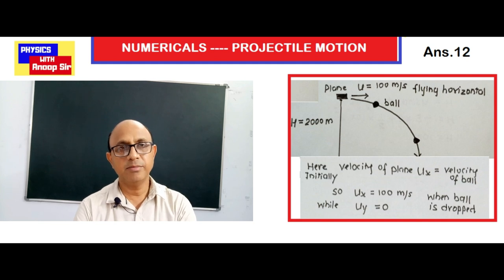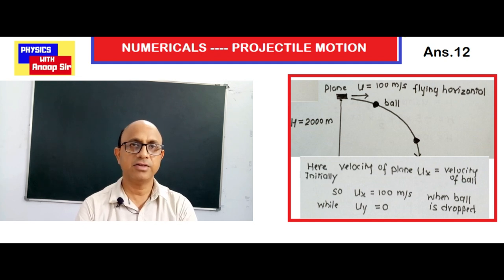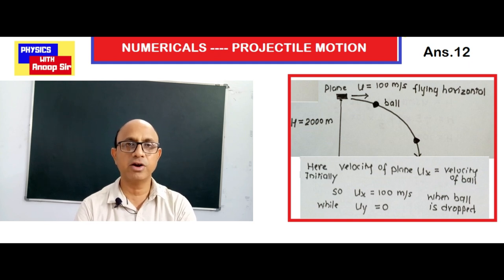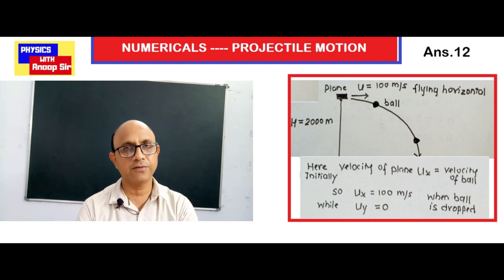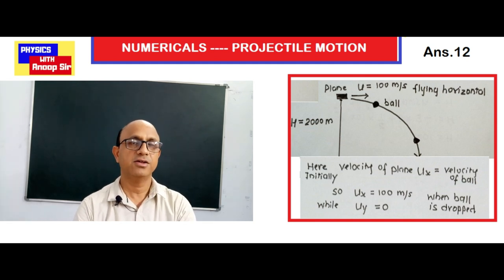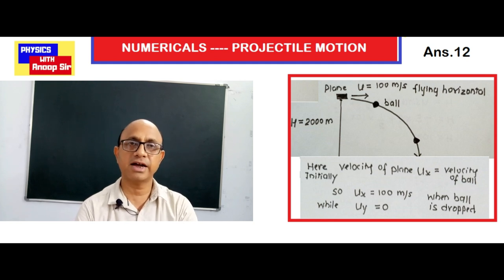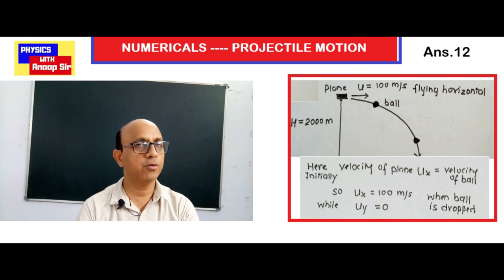In this question, a plane is flying at 100 meter per second in the horizontal direction at a height of 2000 meters from the ground, and it drops an object (ball) downward. Since the plane is moving horizontally, the ball will also have the same horizontal velocity of 100 meter per second as the initial velocity. The horizontal component u_x = 100 meter per second for the ball.